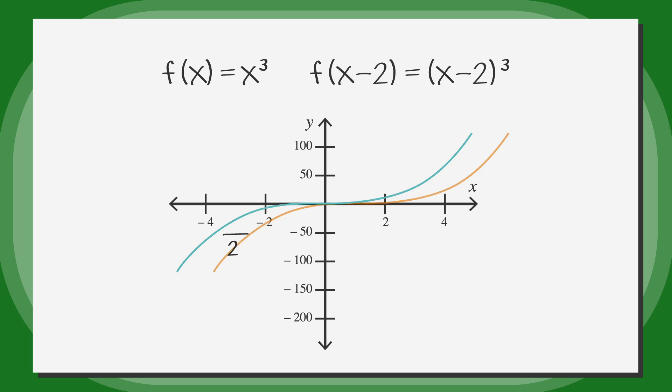So let's let our function be f(x) equals x cubed. Algebraically, if we substitute x minus 2 in for x, we would get the new function (x-2) cubed. If we substitute in this way, we would shift the function to the right by 2.